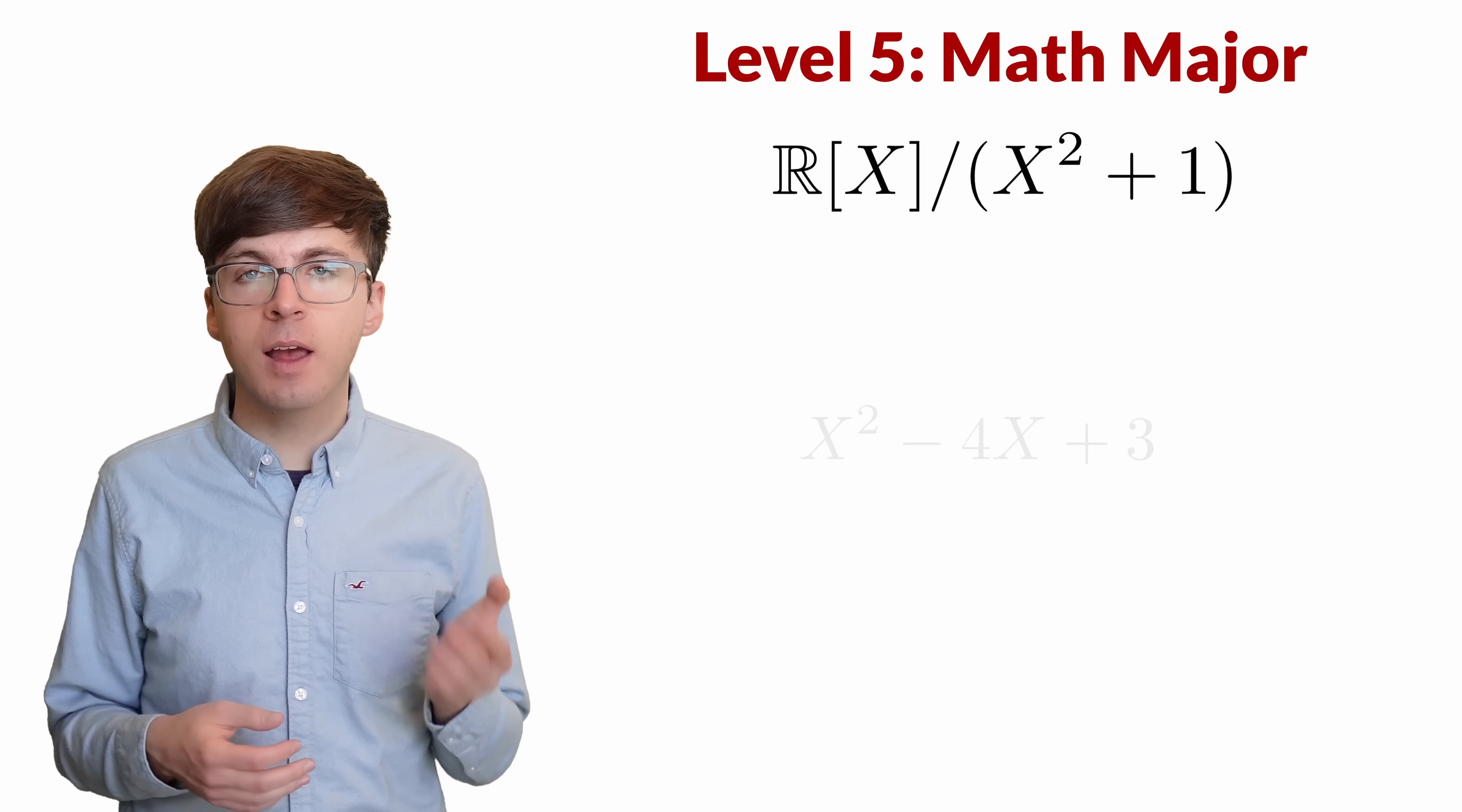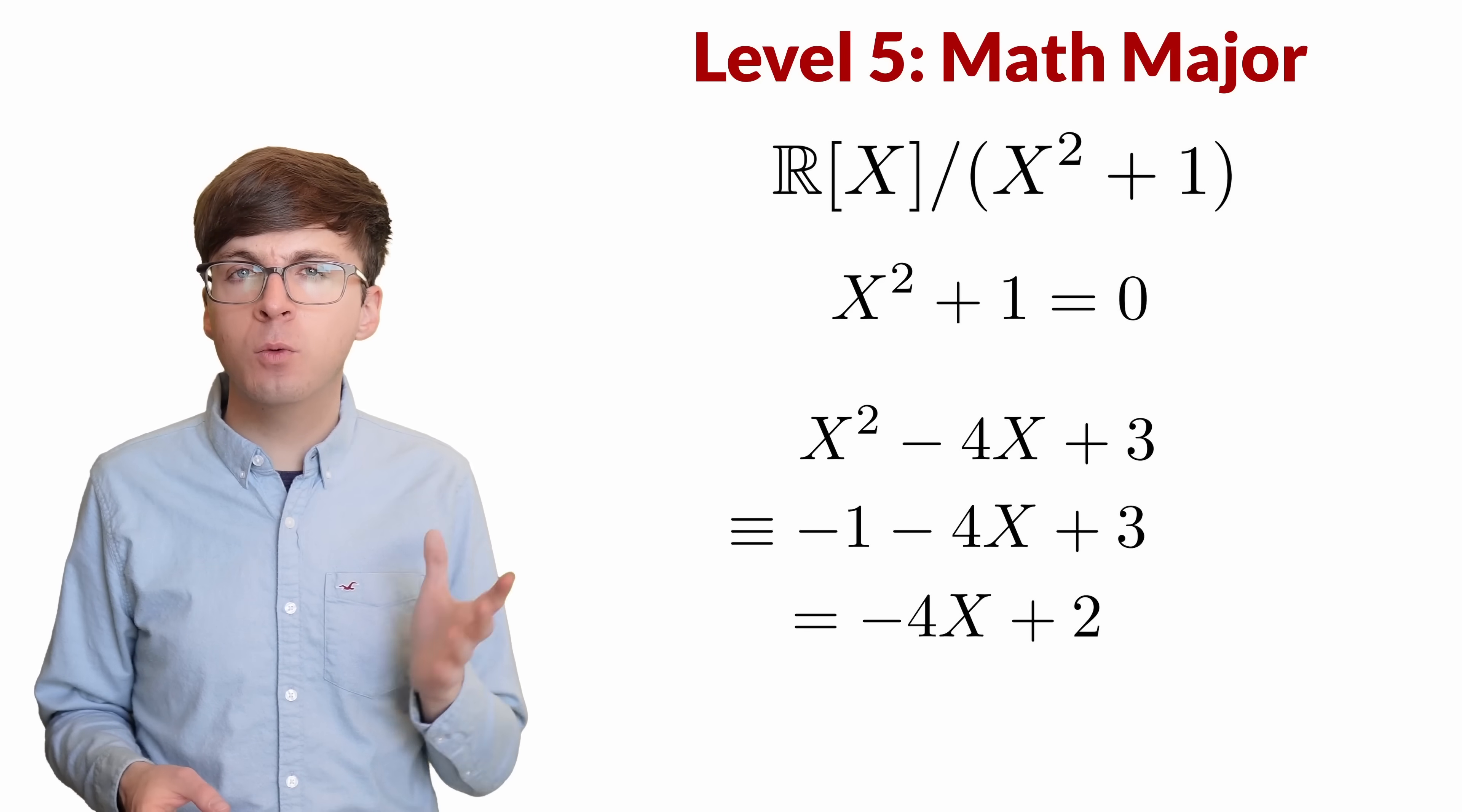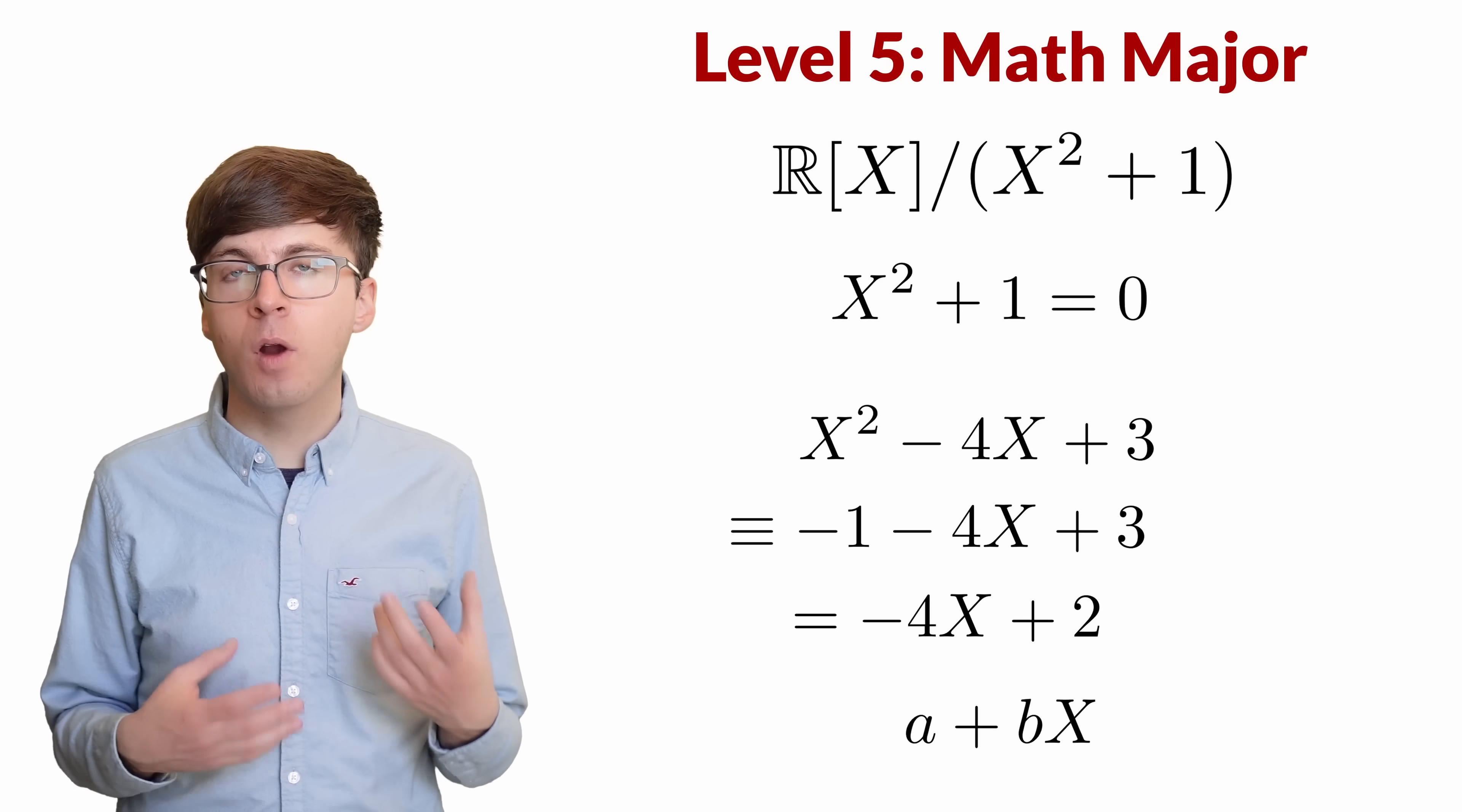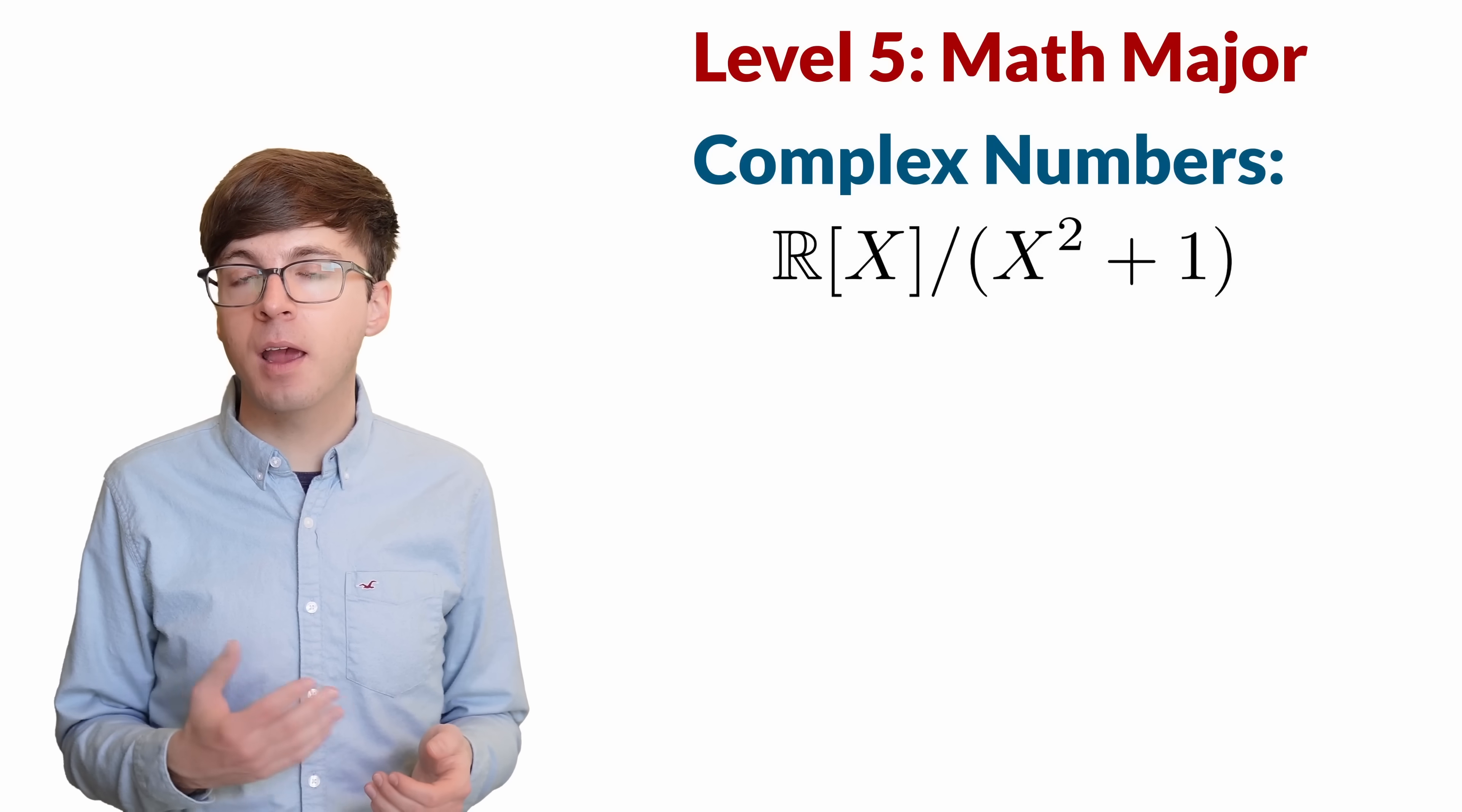This is definitely abstract, so let's write out an example. Say we have the real polynomial x squared minus 4x plus 3. We've modded out by x squared plus 1, so x squared plus 1 equals 0, or x squared is negative 1. We can simplify our polynomial to be negative 1 minus 4x plus 3, which is negative 4x plus 2. We say the polynomials x squared minus 4x plus 3 and minus 4x plus 2 are equivalent mod x squared plus 1. No matter what real polynomial we start with, we can reduce to an equivalent linear polynomial, a plus bx, where a and b are real numbers. This looks just like the complex numbers a plus bi, and the definition ensures that all of its algebra properties match the properties of the complex numbers. So we can actually define the complex numbers to be this quotient field, Rx mod by the ideal generated by x squared plus 1.